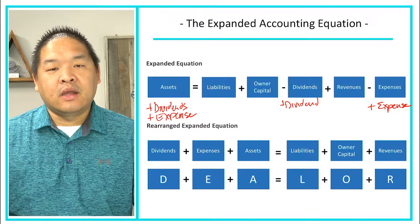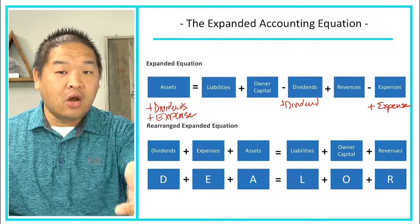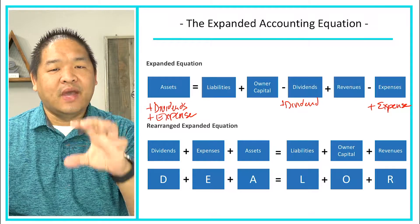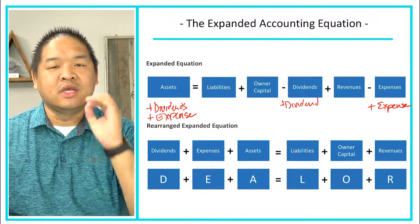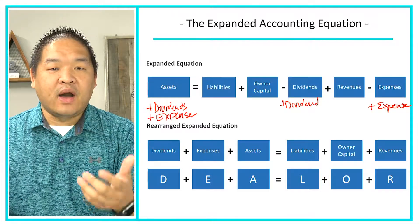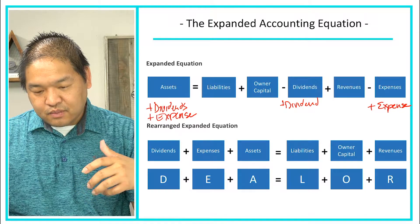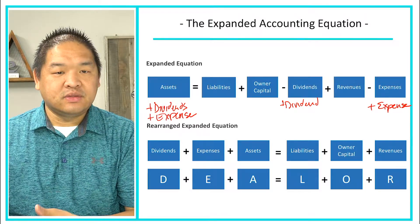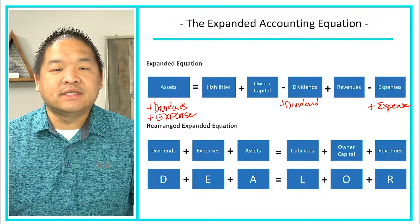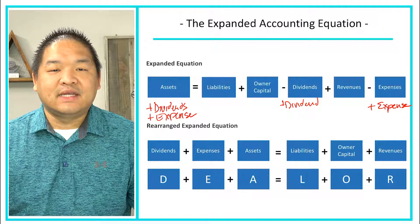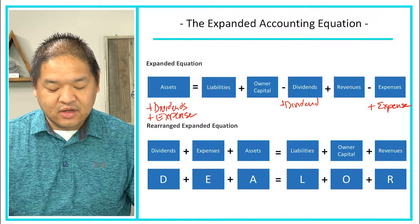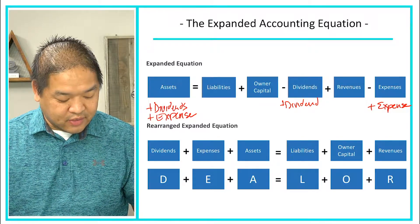That is the expanded accounting equation — the equation you should know going forward. Also keep in the back of your mind the basic accounting equation: assets equals liabilities plus owner's equity or stockholders equity. Not a lot of people use the expanded equation, but you need to know that you can convert from that to DEALER.